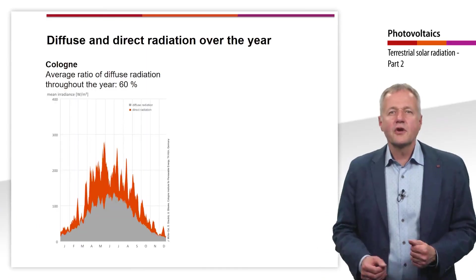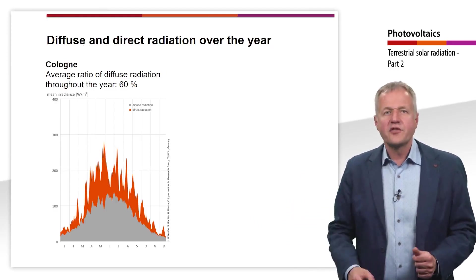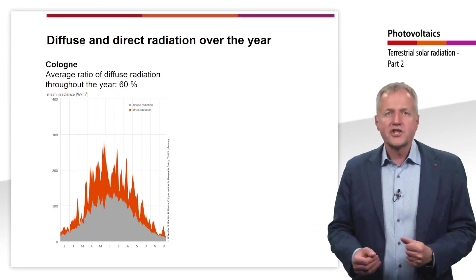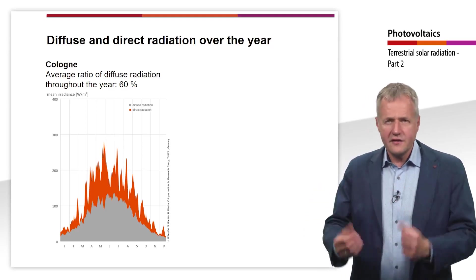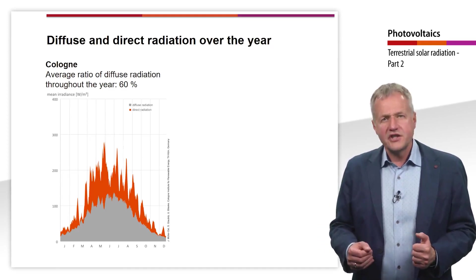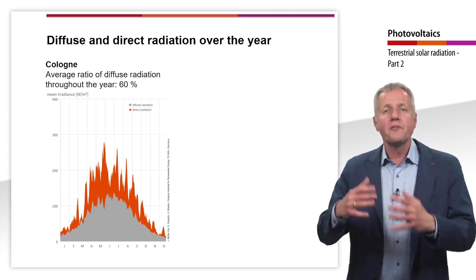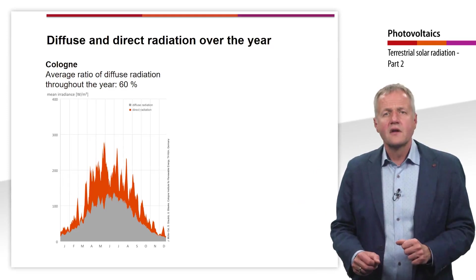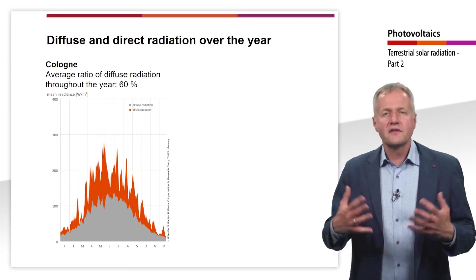This diagram shows the irradiance for a whole year in Cologne. The x-axis represents months, and the y-axis shows average irradiance over a whole day including the night. It can be seen that the solar energy from diffuse radiation on a horizontal surface is higher than from direct radiation throughout the year, with the average ratio of diffuse radiation being around 60%.